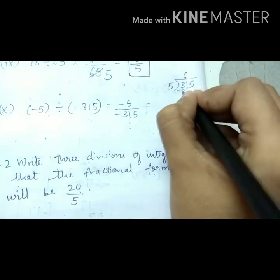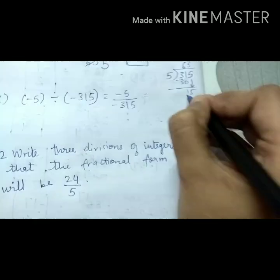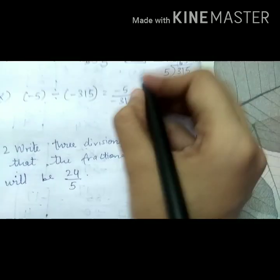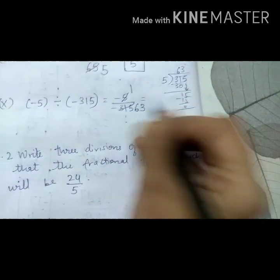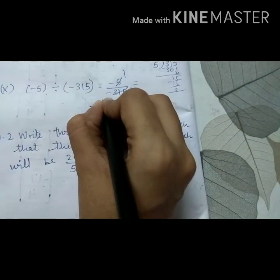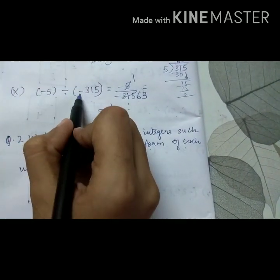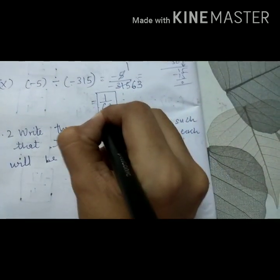5 sixes are 30, 5 threes are 15, so we got 63. 5 ones are 5, 5 sixty-threes are 315. So 1 upon 63. Negative, negative, answer is positive. So no need to put positive sign. If you write, then also it is correct.